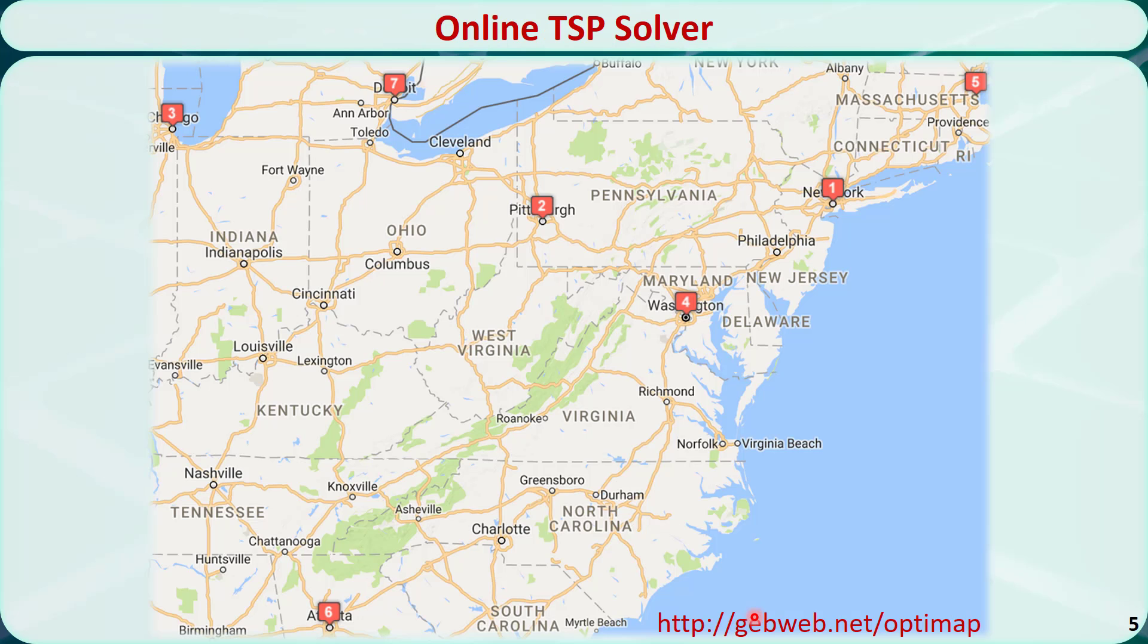One direct application of the traveling salesman problem is to plan your trip to different cities. There are some online tools that can help you do this. One such tool can be found at this website, http://gabweb.net/optimap. You can choose different cities and find the tour with the shortest traveling distance.